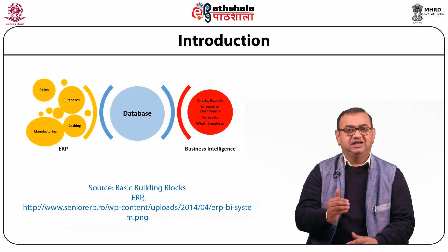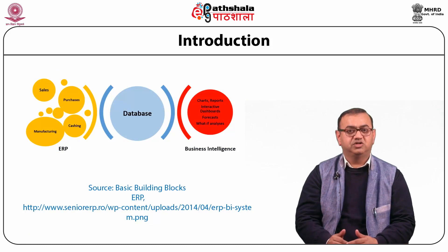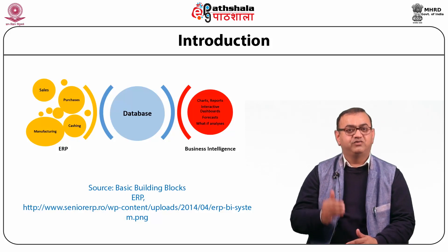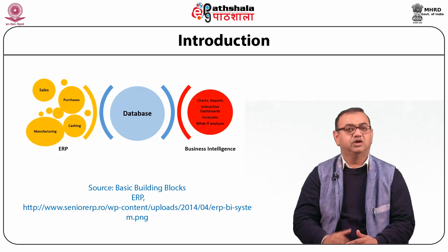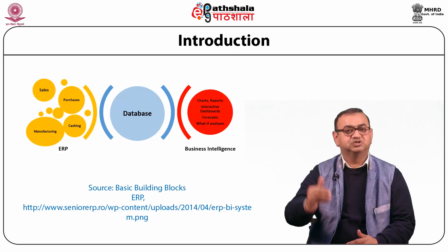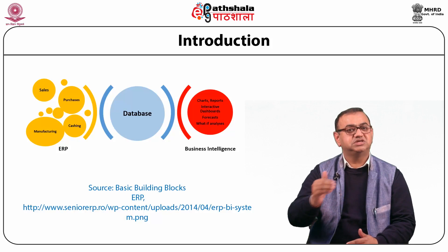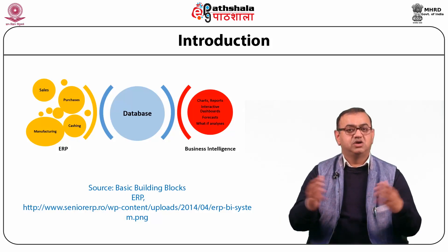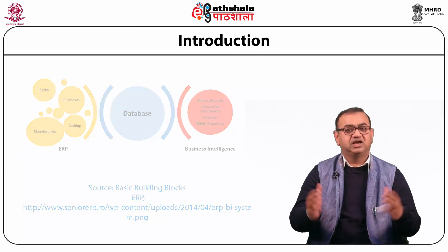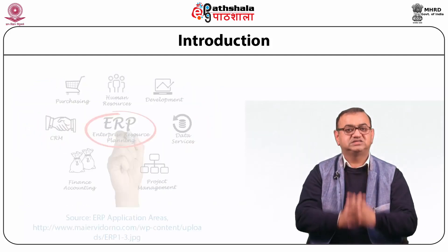Would your brain be as diligent in controlling your body's different parts if it had no information on their strengths, weaknesses and abilities? It is powerful as it receives and interprets numerous signals sent from different parts of the body. An Enterprise Resource Planning system functions similar to the brain, integrating different departments or functions across a company in a centralized manner.